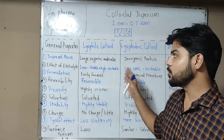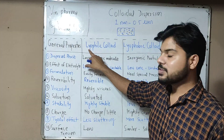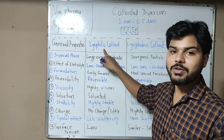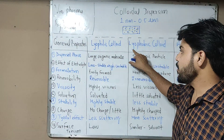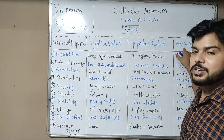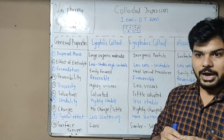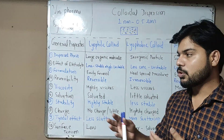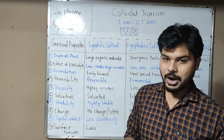Let's see what is the difference among those. If we talk about lyophilic: 'lyo' means solvent and 'philic' means mix — we call it solvent-loving colloid. Lyophobic: 'lyo' means solvent, 'phobic' means hating — so solvent-hating colloid. Association colloid is amphiphilic, meaning they are lipid soluble as well as water soluble — both lipophilic and hydrophilic.